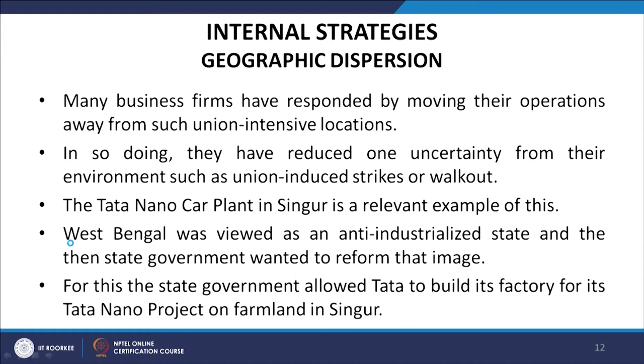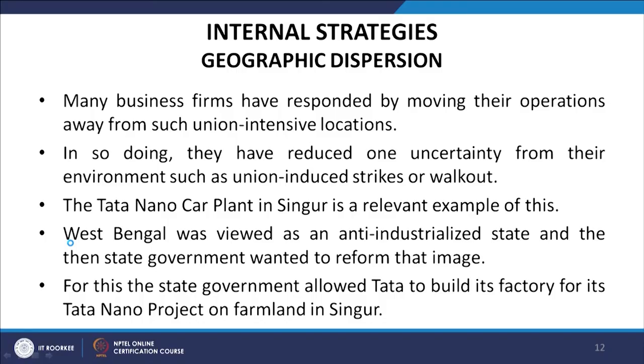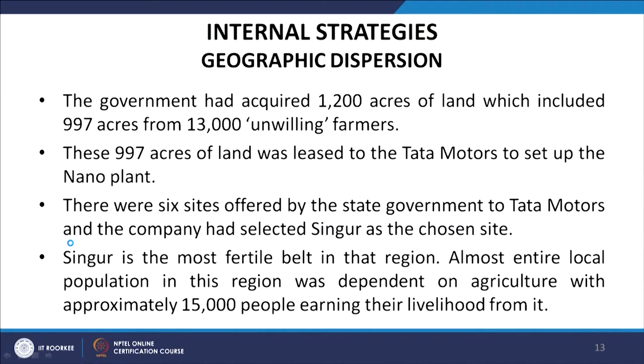The Tata Nano car plant in Singur is a relevant example. West Bengal was viewed as an anti-industrialized state and the state government allowed Tata to build its factory for the Nano project on farmland in Singur. The government had acquired 1,200 acres of land, including 997 acres from 13,000 unwilling farmers, which was then leased to Tata Motors. Singur is the most fertile belt in that region.